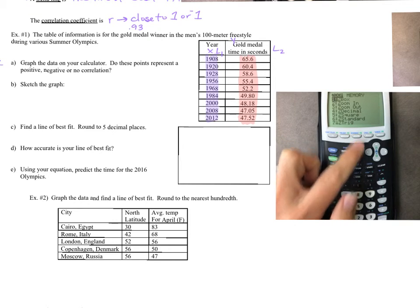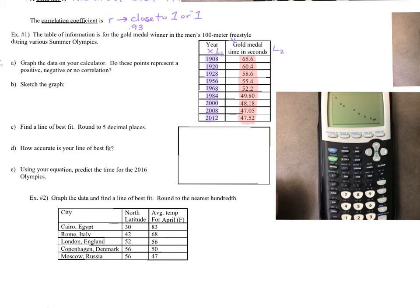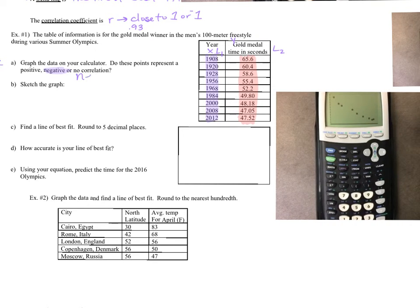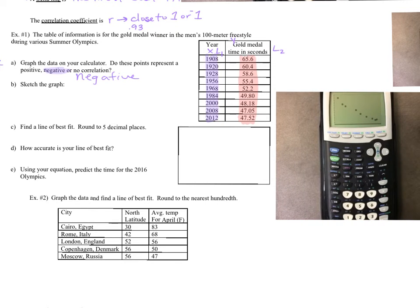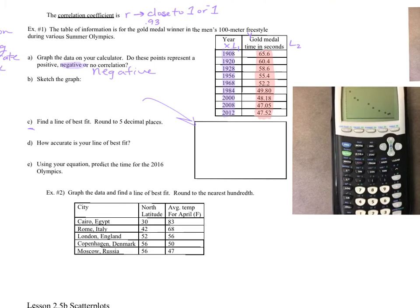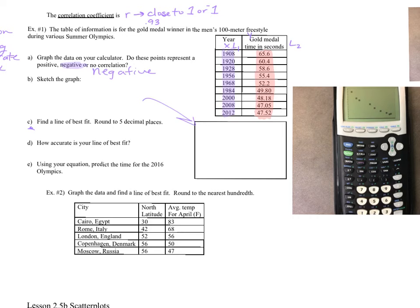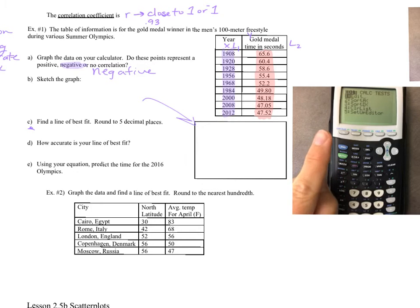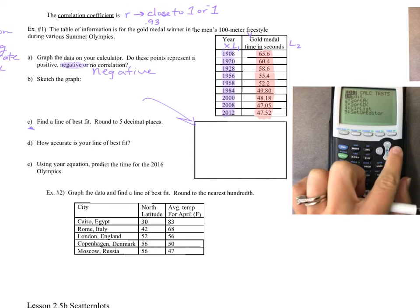I don't sketch the graph right away. What I do is find my line of best fit first because I like to draw the line in before plotting points. So I'm going to jump to letter c before sketching. We're going to round to five decimal places. We have all our data in — go back to stat, but now we don't want edit. We want calculate, so arrow over to calculate.